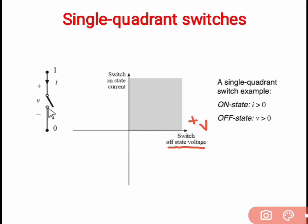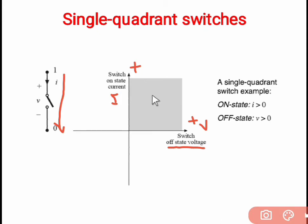If we close this switch, current will flow from terminal 1 to terminal 2 — positive current will flow. So when the switch is in on state, the positive current I will flow. This type of switch is known as the first quadrant switch or single quadrant switch, in which it conducts positive current when on, and when switch is off, the voltage appearing across the switch is plus V volts. So it is the first quadrant switch.